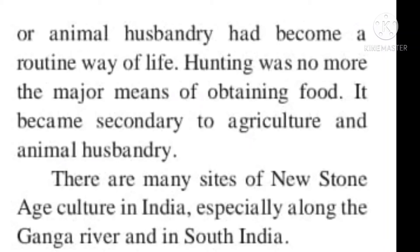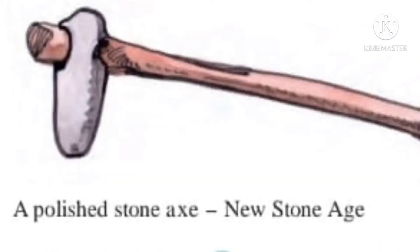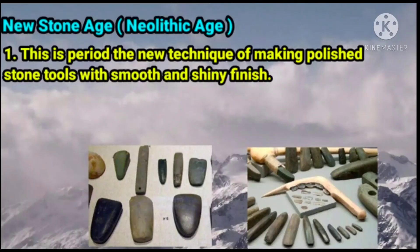In the New Stone Age, agriculture, animal husbandry, and domestication of animals had become very important means of obtaining food. Hunting, which had been a very important activity in the Middle Stone Age, had become less important. In India, a number of New Stone Age sites are found along the Ganga river and in the south of India. These pictures show a polished stone axe and various other polished tools made in the Neolithic or New Stone Age.